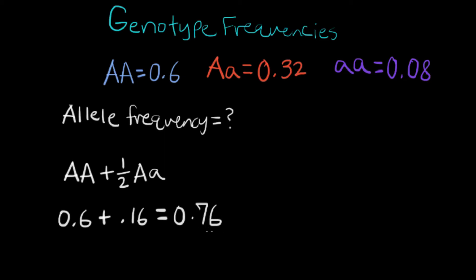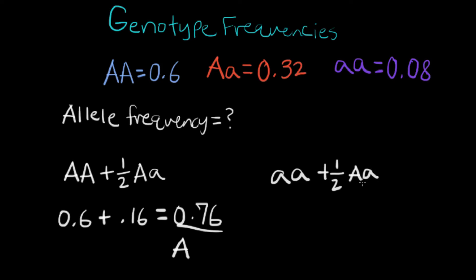Now to calculate the allele frequency for the little a, we need to take the homozygous recessive genotype frequency (little a, little a) plus again half of the heterozygous. Because half of the alleles in the heterozygous will contribute to the little a. So this is going to give us 0.08, the genotype frequency, plus half of the genotype frequency of the heterozygous, which is 0.16. So this gives us a total of 0.24.